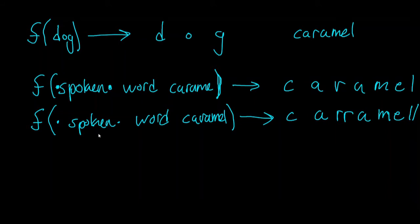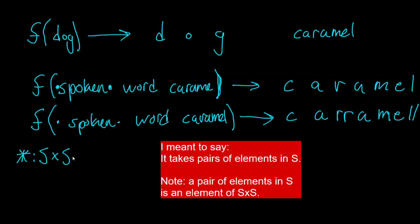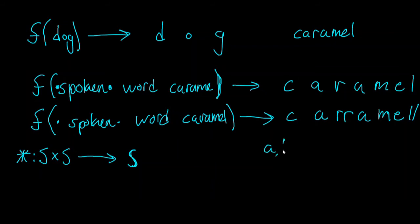When we talk about functions that are well-defined — or in the context of modern algebra, sometimes called abstract algebra — people talk about binary operations that are well-defined. A binary operation star, defined on a set S, takes pairs of elements in S cross S and maps them to S. So if A and B are in S, then this binary operation star takes A star B to some element C, where C is also in S.